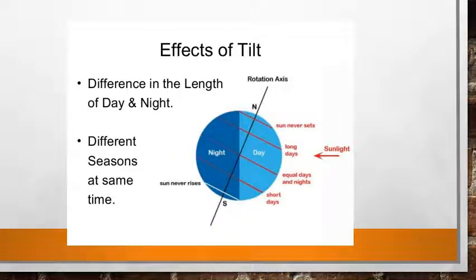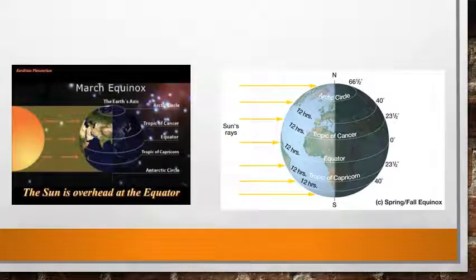Because of revolution and the inclination of the earth's axis, there is a difference in the length of day and night, and different seasons occur at the same time. When the northern hemisphere is tilted towards the sun, the days there are longer, and as we move towards the north pole the length of the day keeps increasing. Beyond the Arctic Circle, the sun never sets for six months. As we move from the equator towards the south pole, days become shorter and shorter, and beyond the Antarctic Circle the sun never rises for six months.